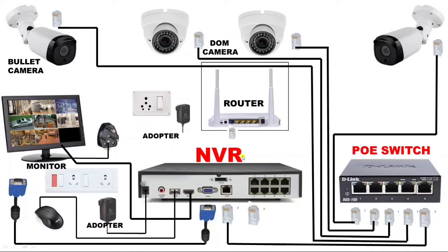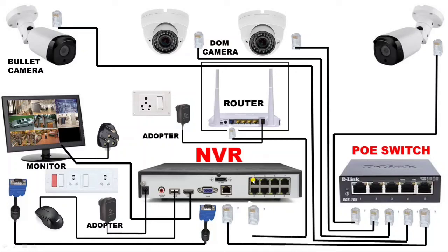For router input power supply, we connect the 12V DC adapter output to the router. For router to NVR communication, we connect one LAN/RJ45 connector — one end to the router and the other to the NVR — so you can view CCTV camera footage on your mobile. IP camera complete installation is now done. We have one communication connector from NVR to POE switch for camera connection, and one LAN connector from NVR to router for data communication.